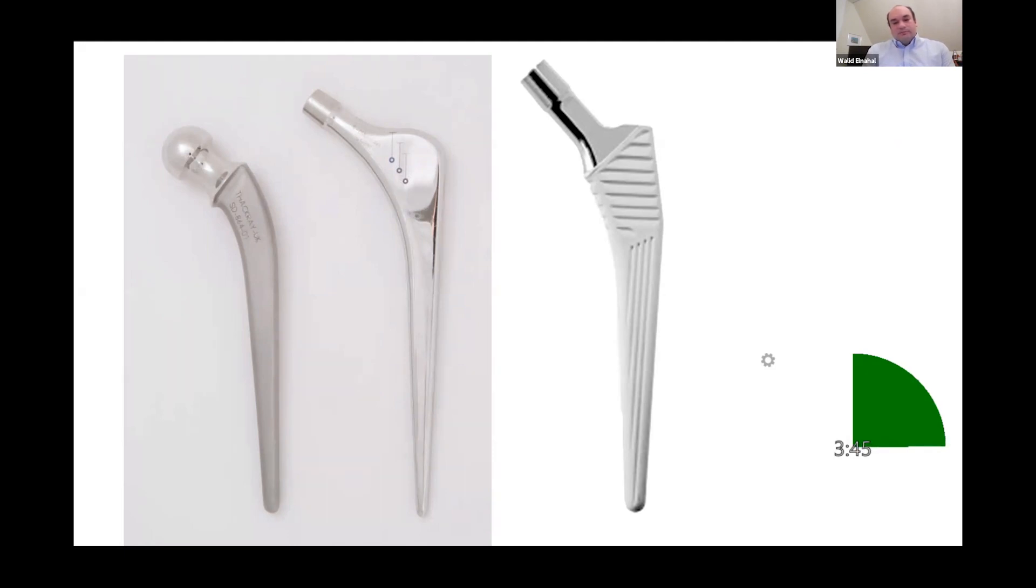The trapezoidal metaphyseal component allows metaphyseal fixation, and it has a tapered stem for fixation to the metaphyseal diaphyseal portion of the femur. What is the white color of the surface? This is the hydroxyapatite coating. So with the Corail stem, it's fully hydroxyapatite coated. It acts as an osteoconductive material to allow bone ongrowth on the stem.